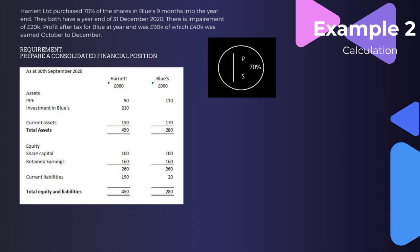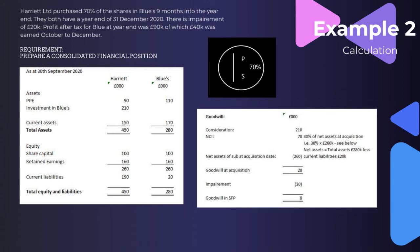Since Harriet bought Blues nine months into the year, they acquired in September, so only the 40k earned October to December is attributable to Harriet. The parent owns 70% of this subsidiary, which is over 50% so control is established. For goodwill: consideration of 210k, plus NCI at 30% of net assets at acquisition (280k total assets minus 20k current liabilities = 260k, so 30% × 260k = 78k), less net assets at acquisition of 260k, gives goodwill at acquisition of 28k. After deducting impairment of 20k, goodwill in the statement of financial position is 8k.